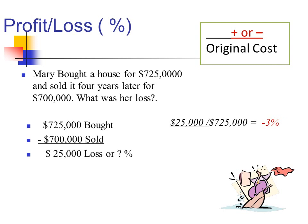Mary bought a house for $725,000 and sold it four years later for $700,000. In this case she had a loss. So we take the amount of the loss — $25,000 — and divide it by the original acquisition price, which was $725,000, and we have a negative 3% loss.